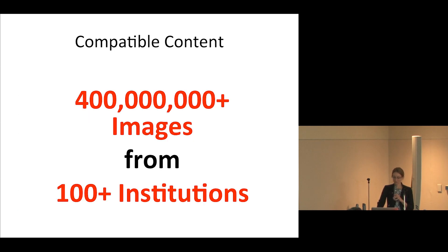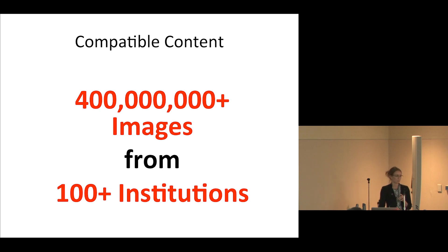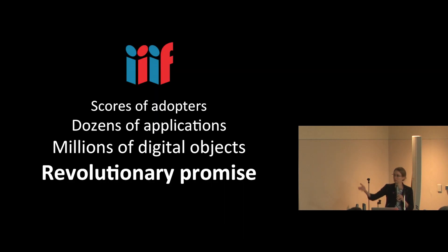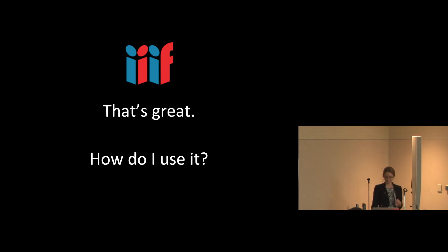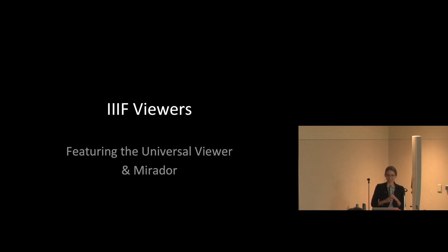Currently we have just about 400 million images on the web available through IIIF, coming from over 100 institutions. Kyoto University Library is one of the many institutions making images available through IIIF. We have many adopters, lots of applications and software that support IIIF, and many digital objects being made available. There is a lot of promise in this technology. My colleague Stuart Snydman will now talk about some IIIF software.